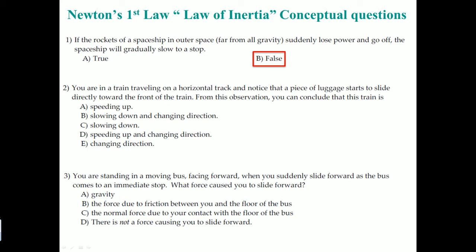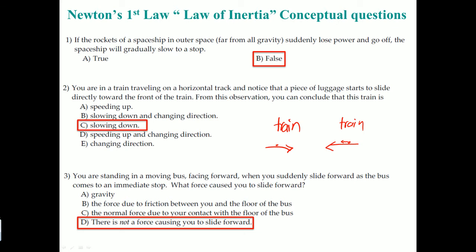Question two: you are on a train traveling on a horizontal track and notice that a piece of luggage starts to slide towards you. From this observation, you can conclude that the train is slowing down. The train is going forward and then slows down — the luggage, due to inertia, continues forward and slides toward you. Question three: you're standing in a moving bus facing forward when you suddenly slide forward as the bus comes to an immediate stop. What force causes you to slide forward? There is no force causing you to slide forward — it is just a result of an external force on the bus, but you were already moving.